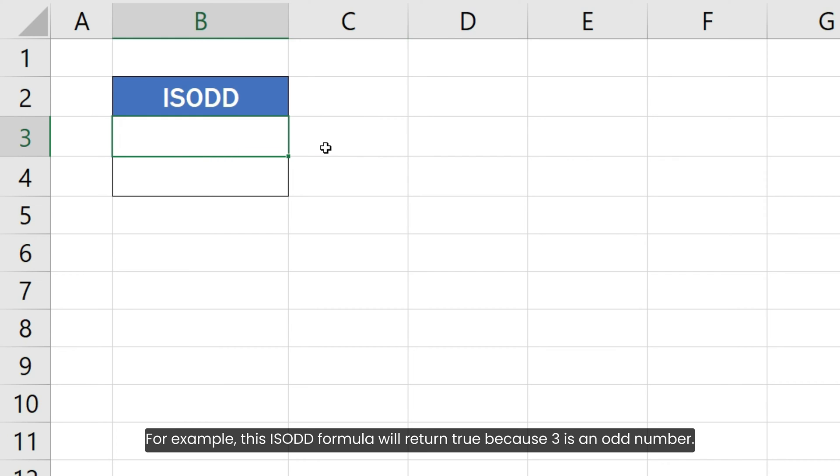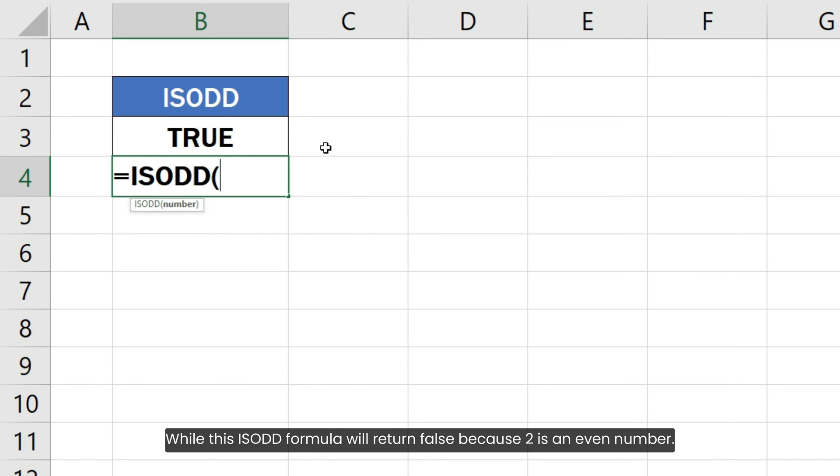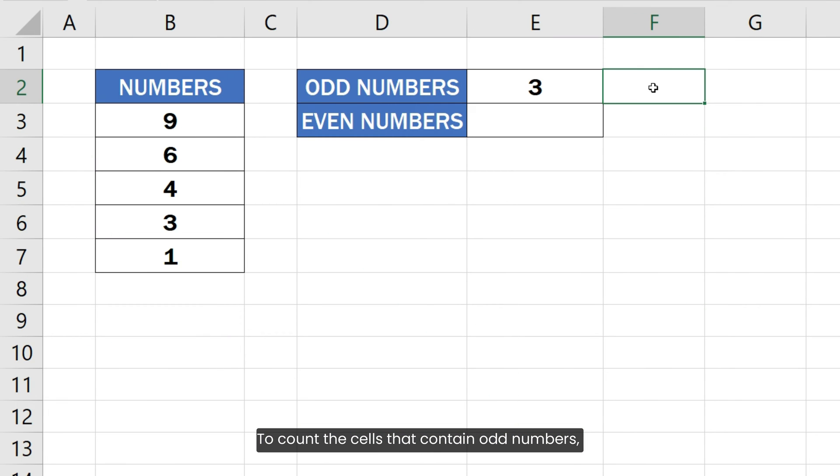For example, this ISODD formula will return true because 3 is an odd number, while this ISODD formula will return false because 2 is an even number. To count the cells that contain odd numbers,